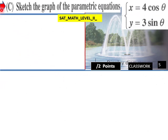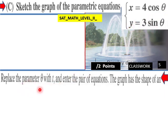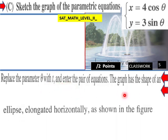Example C: sketch the graph of the parametric equations X equals 4 cosine θ and Y equals 3 sine θ. Replace the parameter θ with T and enter the pair of equations.